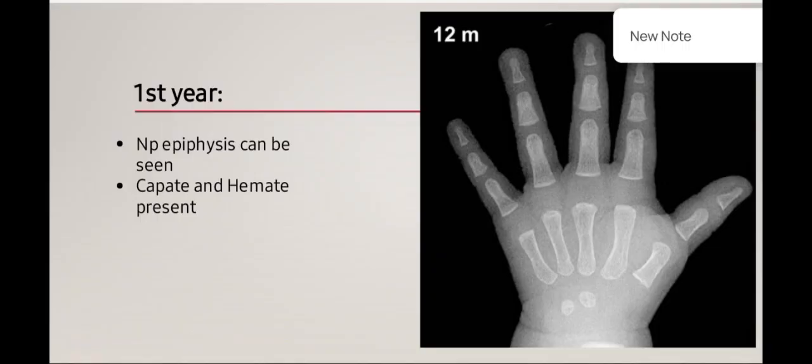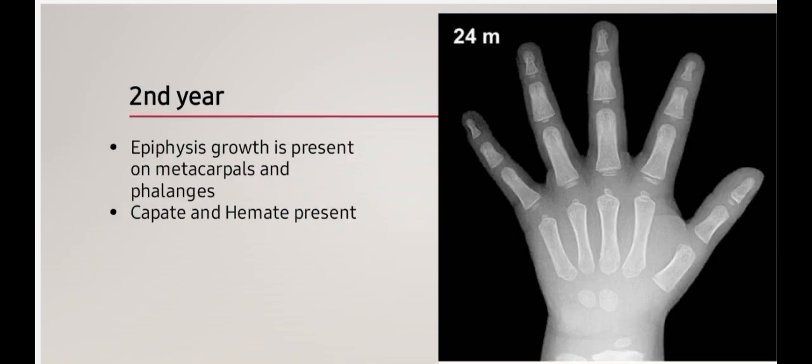At 12 months of age, no epiphysis can be seen over metacarpal or phalangeal bones, but capitate and hamate carpal bones are present. At 24 months of age, epiphyseal growth over metacarpal and phalangeal bones can be appreciated, along with capitate and hamate carpal bones.